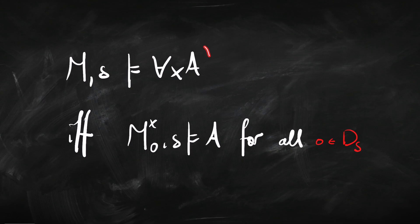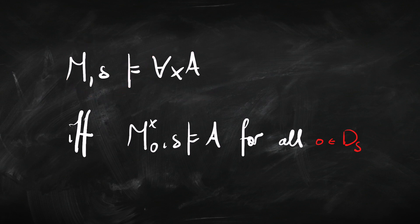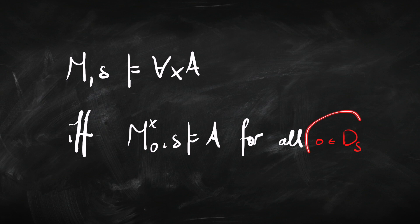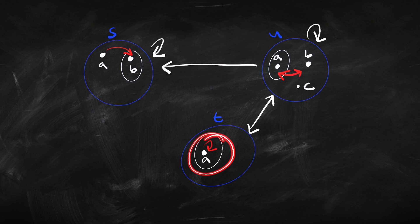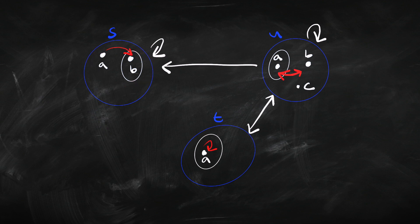And just the same for the universal quantifier: for all X, A is going to be true in a model at a state S just in case, in the variant model where X points at object O, that makes A true at the same possible world S, and that's got to be the case for every object in the domain of that state. So, it doesn't have to be true for all objects in the model at large, just for all of the objects in the domain of that state. The quantifier is local to the possible world that we're talking about.